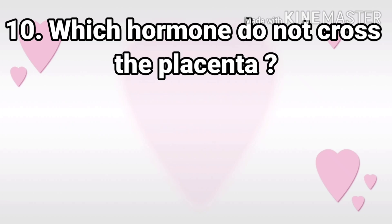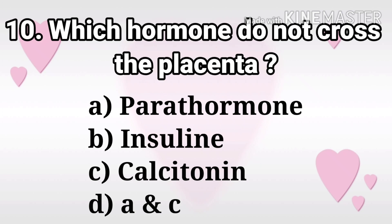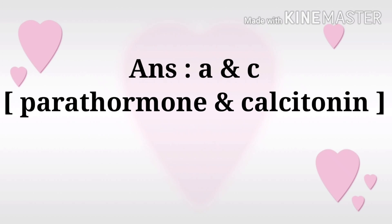Next question: Which hormone does not cross the placenta? The options are parathormone, insulin, calcitonin, and both A and C. The answer is both A and C — that is, parathormone and calcitonin.